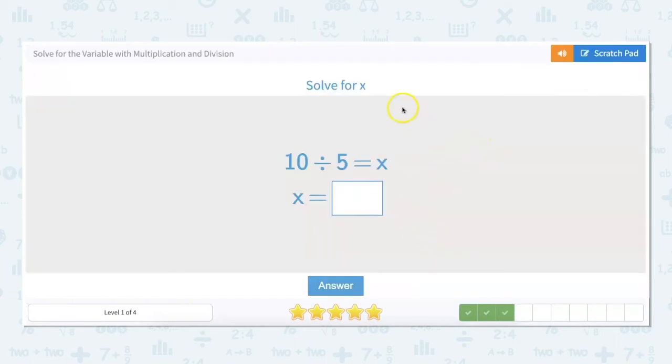For this one 10 divided by 5 equals x. So x equals... For this one you just have to divide. You don't have to actually do any extra steps to solve for the variable because it's just a problem. So you're figuring out 10 divided by 5 equals 2.